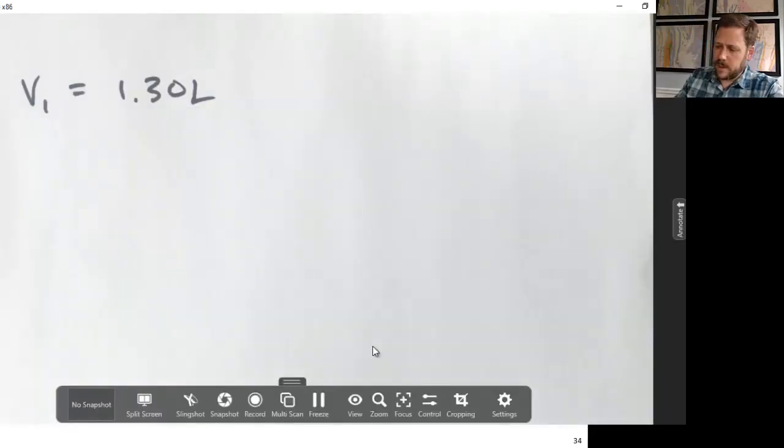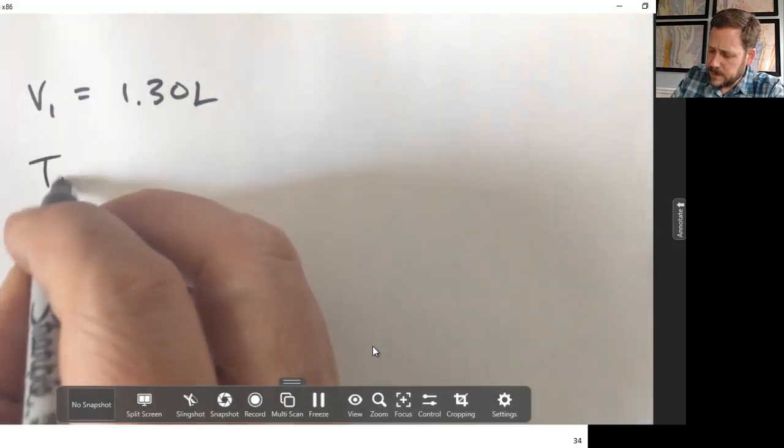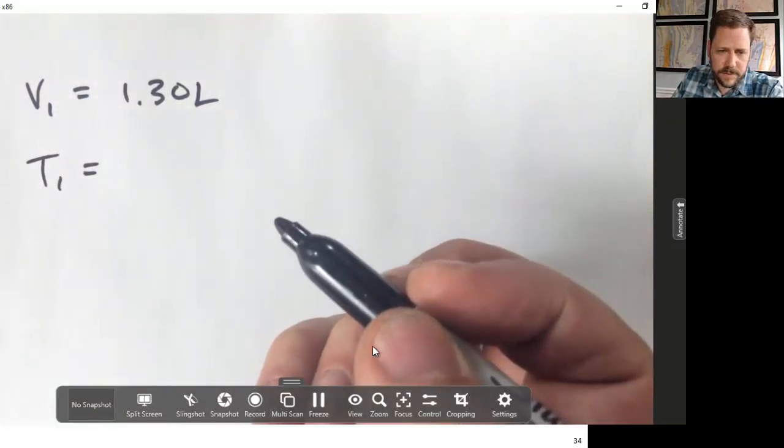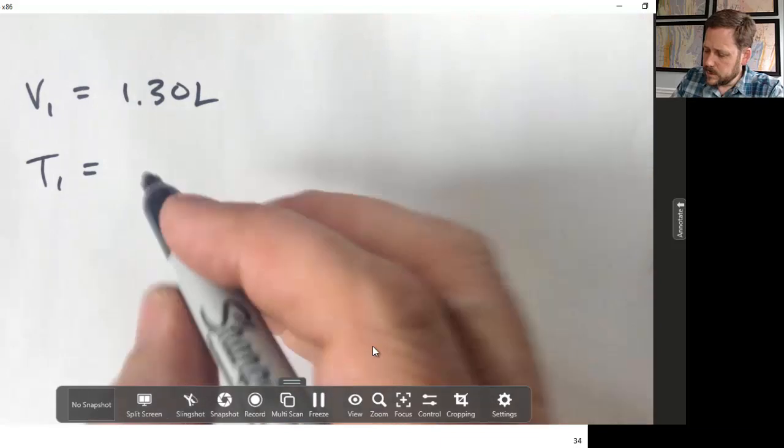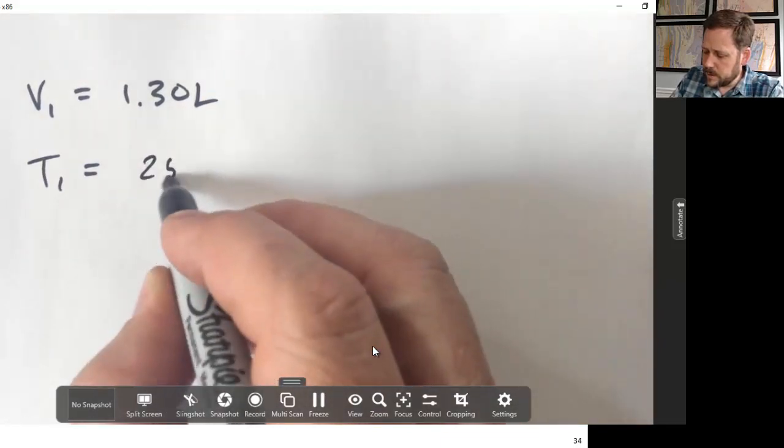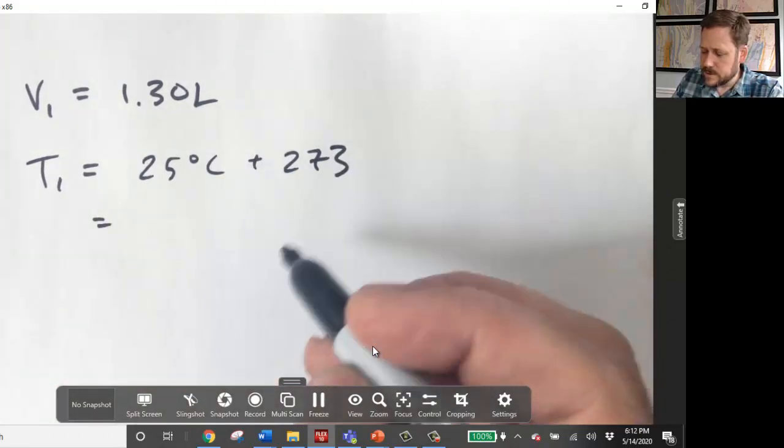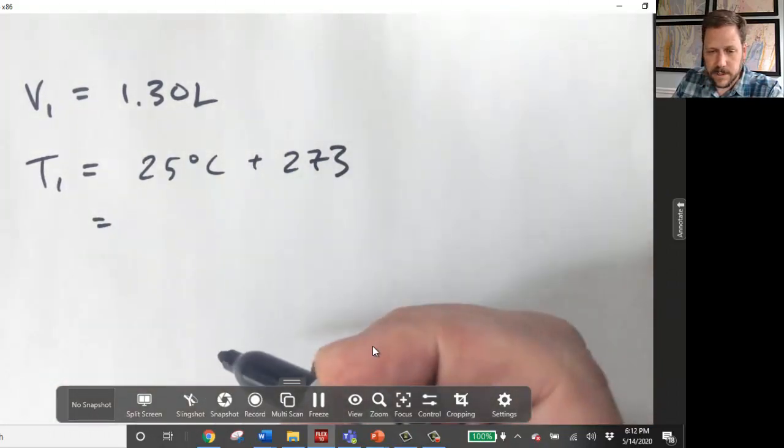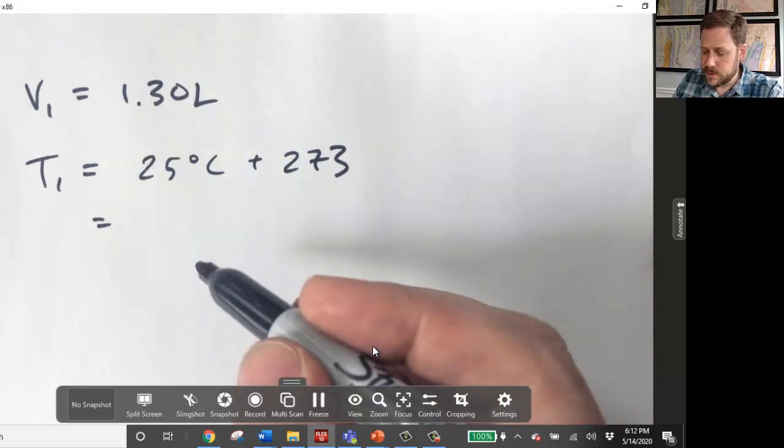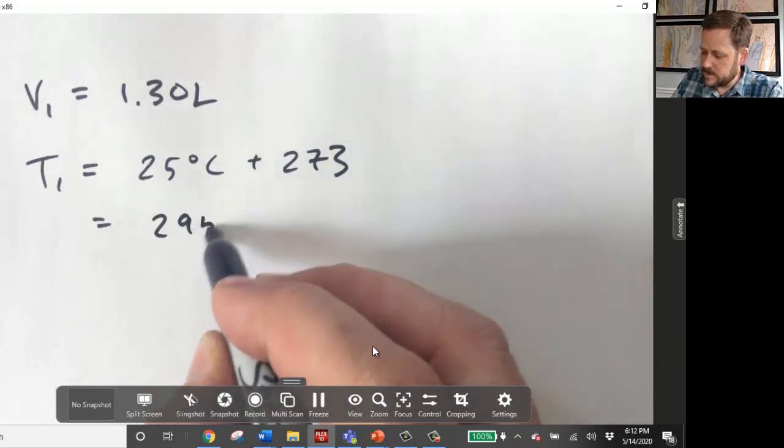So I've got the initial volume, and I've got the initial temperature. The initial temperature, remember, is 25 degrees Celsius. You also hopefully remember that all temperatures must be in Kelvin in this entire unit. So that means the temperature here needs to be converted to Kelvins. That's 25 plus 273. That's 295 Kelvin.